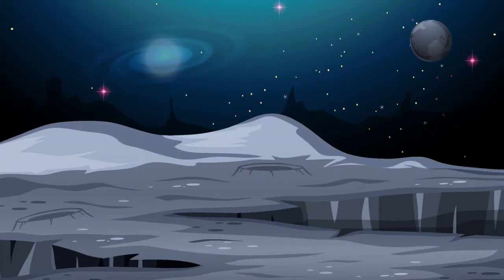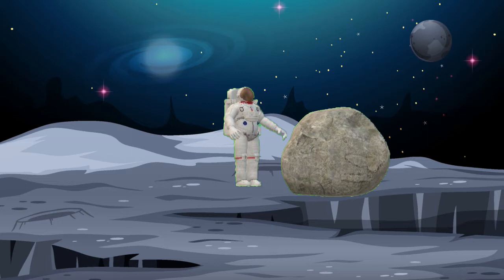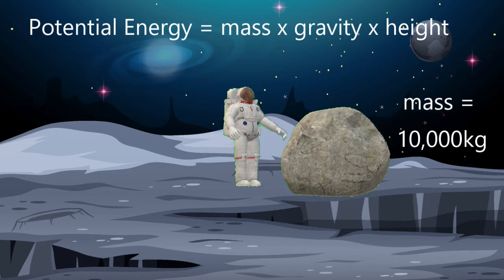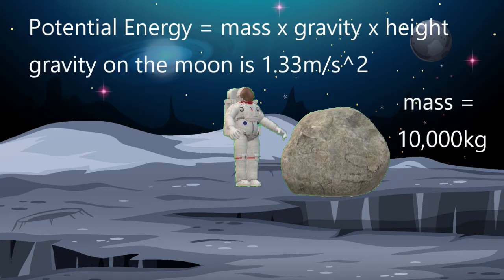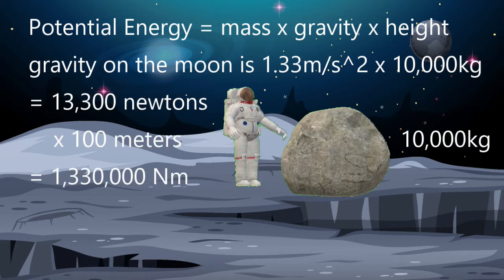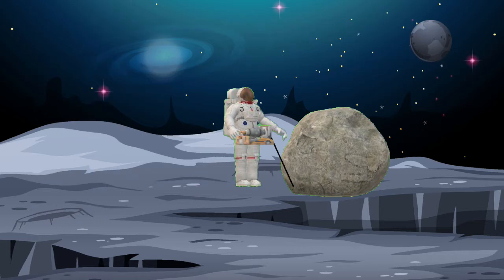There is such a thing as potential energy. If I am on the moon and there is a large boulder on the edge of a precipice, it has a potential energy equal to its mass times the height above the ground times the force of gravity — the formula is MGH. If the boulder has a mass of 10,000 kilograms and the acceleration due to gravity on the moon is 1.33 meters per second squared, we get a force of 13,300 newtons for weight. Multiply this times a height of 100 meters and we get 1,330,000 joules of potential energy, or 1.33 megajoules. If I attach a spool of cable to this boulder and put the spool on a generator, the force of the falling boulder will spin the generator.